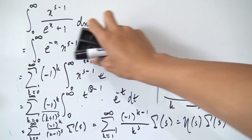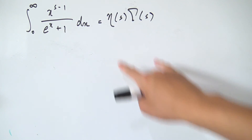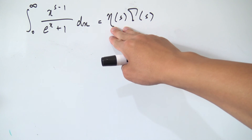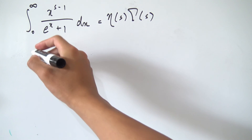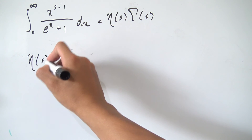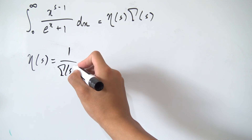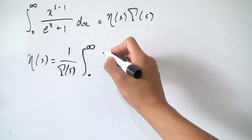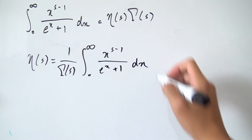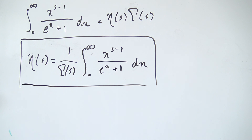So we've shown that our original integral equals eta(s) times Gamma(s). Dividing both sides by Gamma(s) — assuming Gamma is never zero — we obtain the integral representation: eta(s) equals 1 over Gamma(s) times the integral from 0 to infinity of x to the s minus 1 over e to the x plus 1, dx. And there we go — that is one of the integral representations for the Dirichlet eta function. Hope you guys enjoyed, thank you for watching, and I'll see everyone next time.